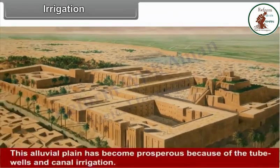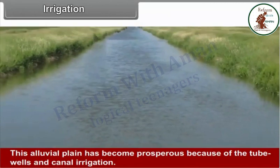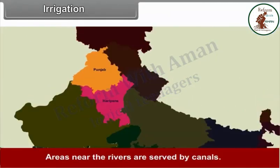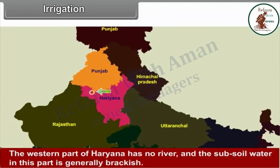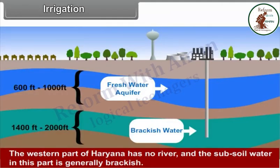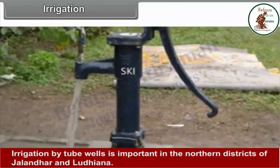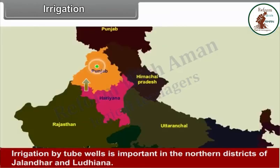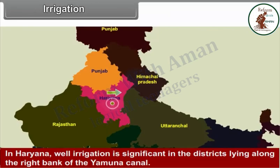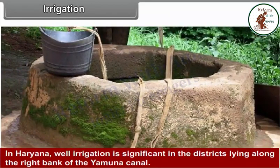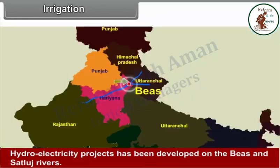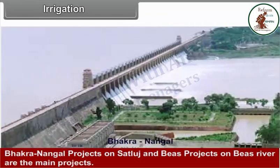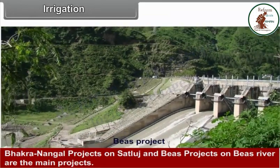Irrigation: This alluvial plain has become prosperous because of tube wells and canal irrigation. Areas near the rivers are served by canals. The region has a high percentage of irrigated land. The western part of Haryana has no river and the subsoil water in this part is generally brackish. Irrigation by tube wells is important in the northern districts of Jalandhar and Ludhiana. Hydroelectricity projects have been developed on the Beas and Sutlej rivers. The Bhakra Nangal project on the Sutlej and the Beas project on the Beas river are the main projects.